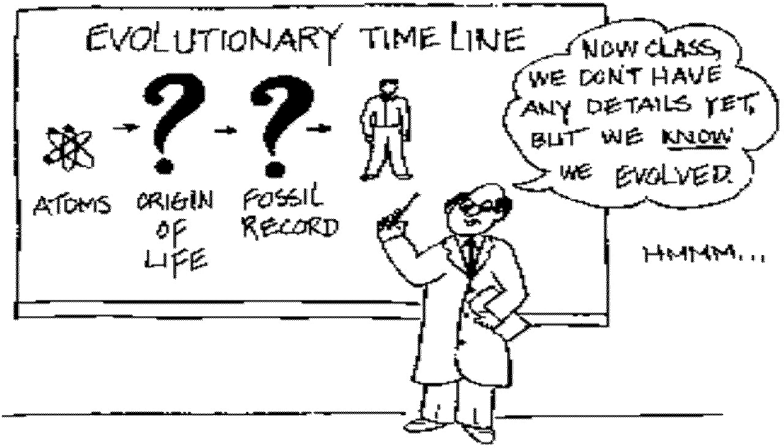These teachers, the researchers say, try to avoid controversy by using one of several strategies. The strategies are kind of strange: teaching evolutionary biology as it applies only to molecular biology and failing to explain evidence that one species gives rise to other species, or telling students they don't have to believe in evolution but they have to know it for tests, or telling students to make up their own minds.